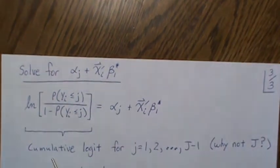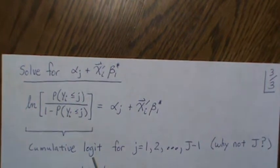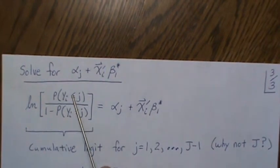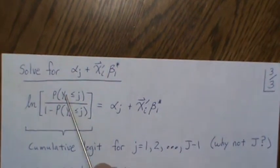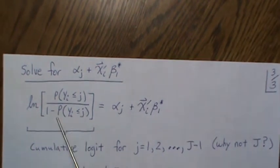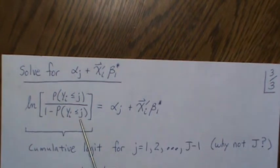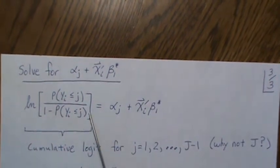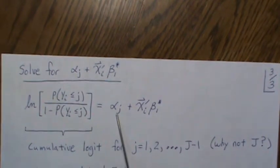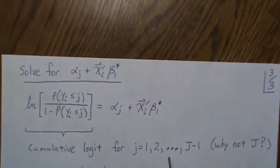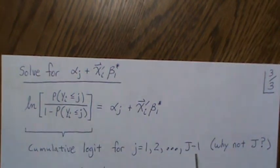So this is called the cumulative logit function. Right? Because it's probability less than or equal to J and this is being strictly greater than J. So this is an odds, cumulative odds ratio. And so, but we have functions for all from J equals one to J minus one.